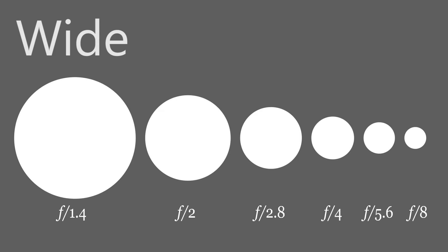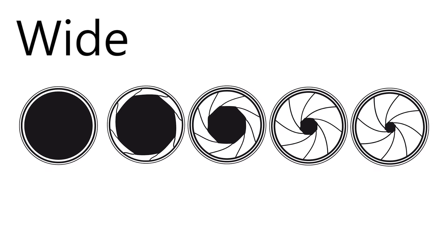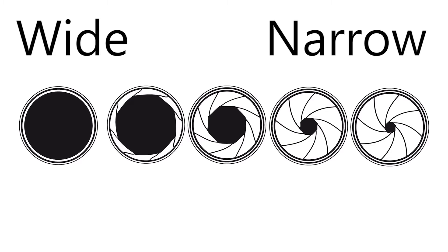A smaller f-stop number means a wider aperture, and also faster. As more light enters the camera, the shutter can close faster, which is why some lenses are described as being faster than others. A higher f-stop number means a narrower aperture, where less light enters the camera.